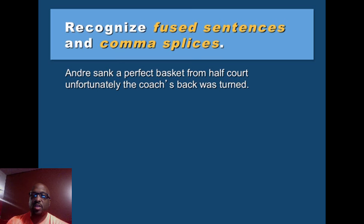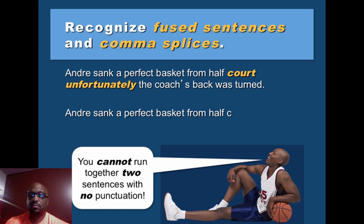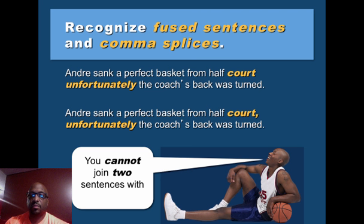Here's an example: 'Andre sank a perfect basket from half court, unfortunately the coach's back was turned.' This is called a fused sentence — basically the same thing as a run-on sentence. A fused sentence is when you have two sentences joined together with no punctuation. Adding a comma after 'court' creates what's called a comma splice. You cannot join two sentences with just a comma.